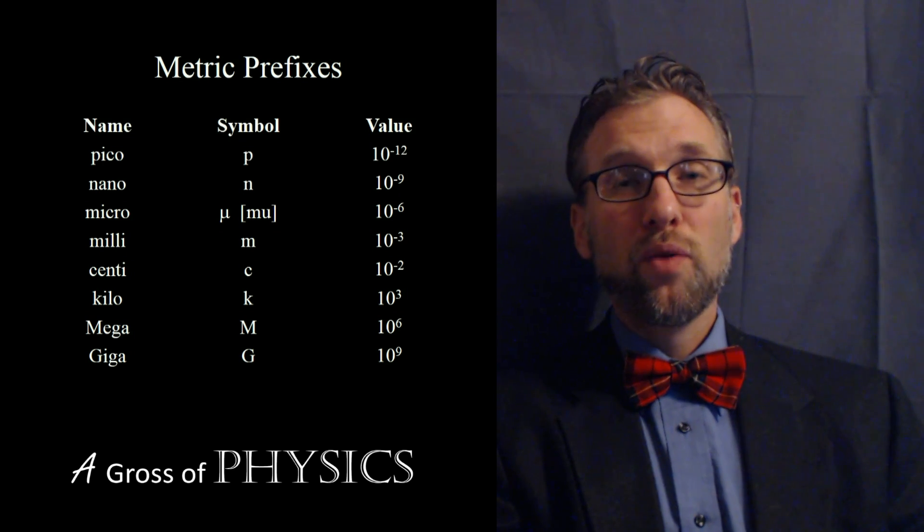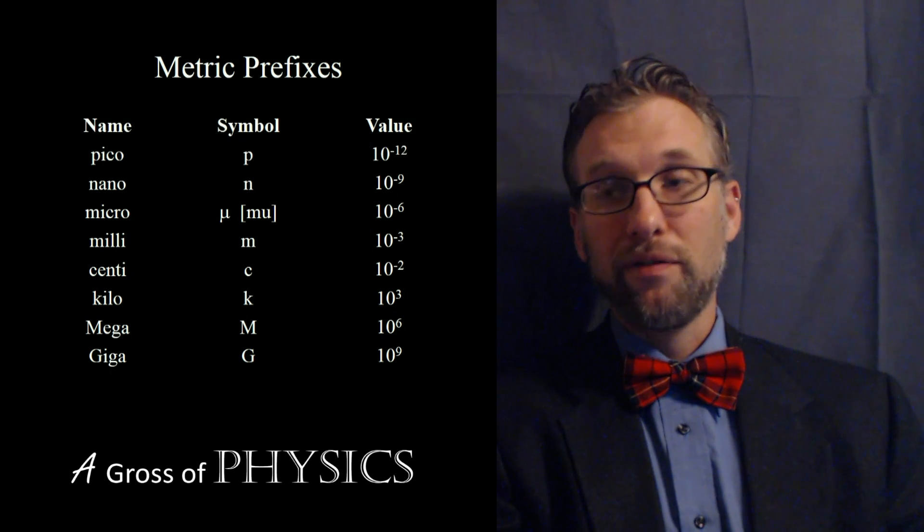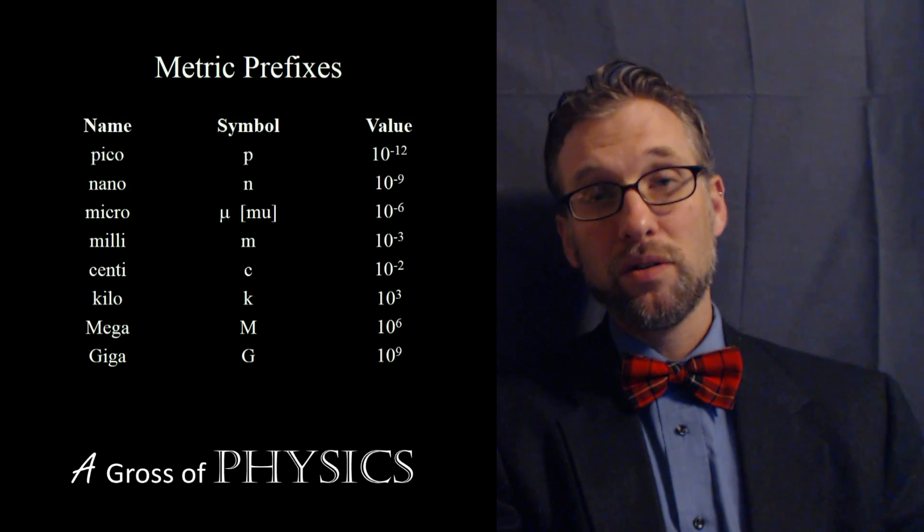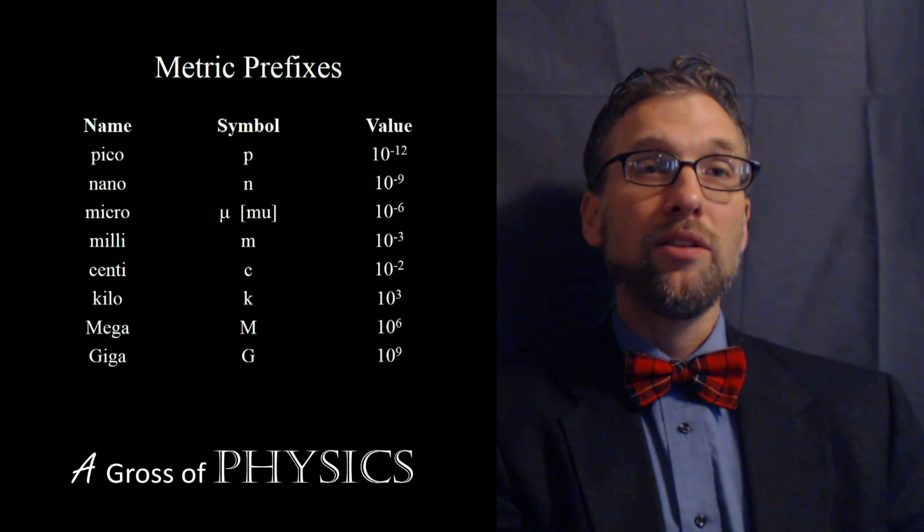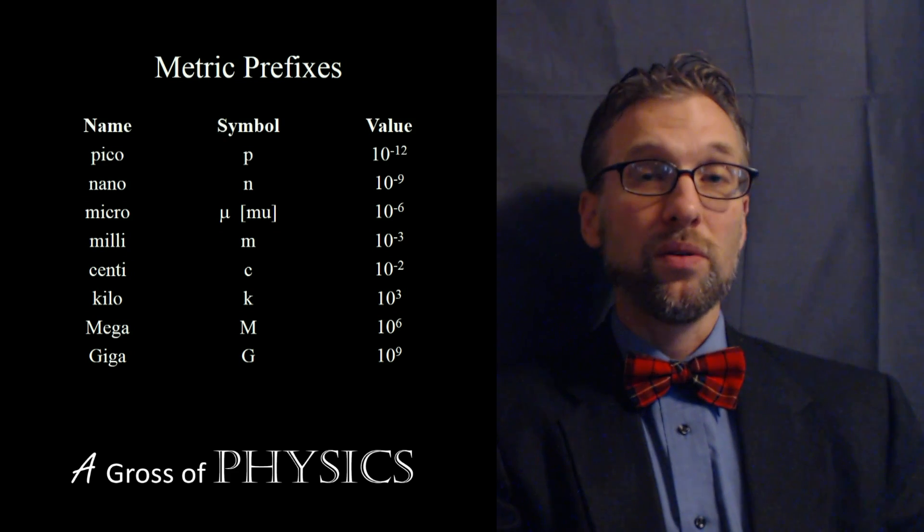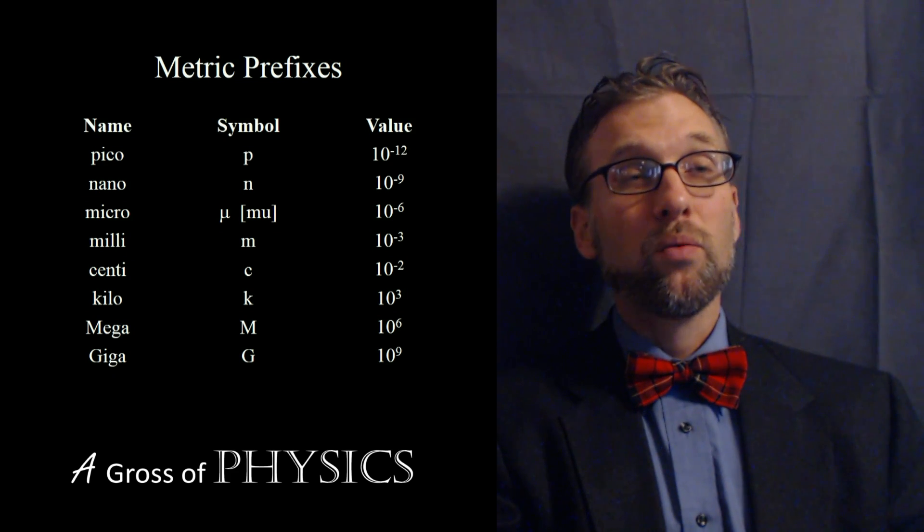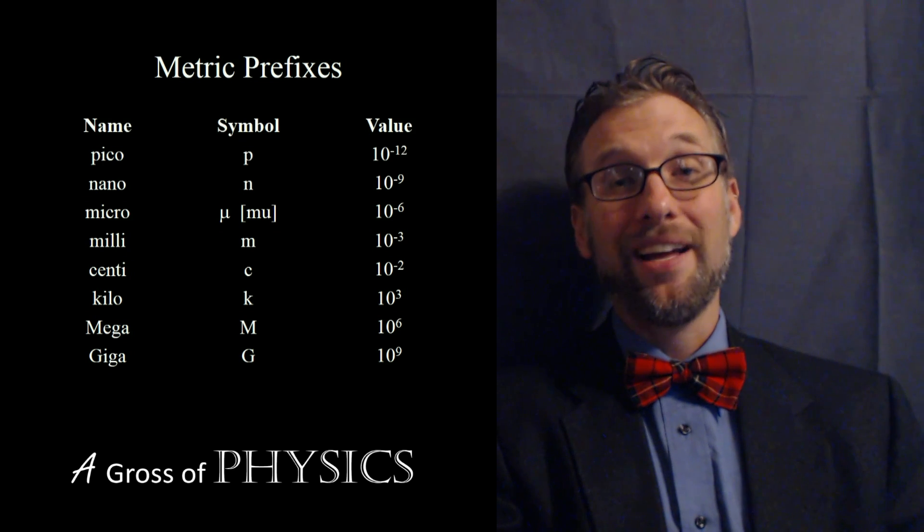It's cumbersome to write down a number of zeros after a value. So if we write one and then six zeros, that would represent a million. Well, instead of writing one and then zero, zero, zero, zero, zero, zero, we can replace the zeros with one letter.